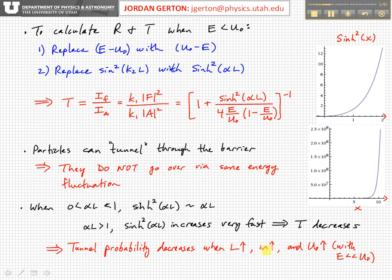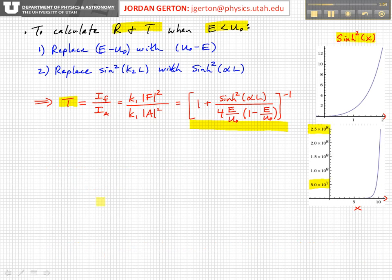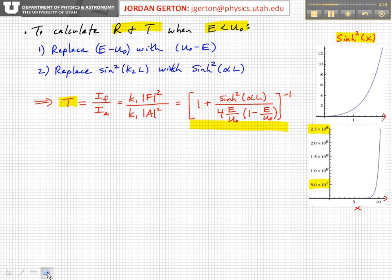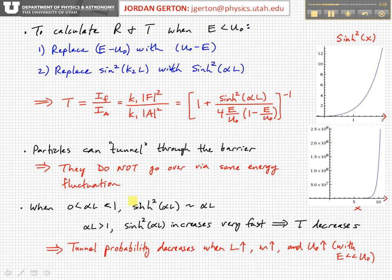Also, when the mass goes up, then the tunnel probability will go down. Where does that come? Well, alpha, if you remember, is equal to square root of 2M times U not minus E over H bar. So when the mass gets big, when you talk about some sort of macroscopic particle, then the mass is very big. And so that will make alpha very large. When alpha is very large, then the hyperbolic sine function is very large, and again, the tunnel probability will go down.